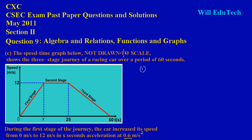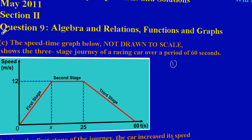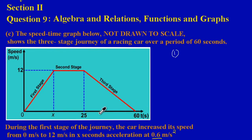Hello, welcome back to another edition of our CSEC exam pass paper questions and solutions. In the previous two videos we looked at question 9 parts A and B, so in this video we'll be answering part C. Part C has a speed-time graph with a few questions. The graph shows the y-axis as speed in meters per second and the x-axis as time in seconds.